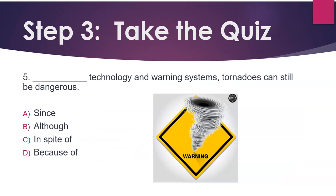Number 5: Technology and warning systems — tornadoes can still be dangerous. Since, although, in spite of, because of.